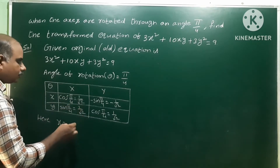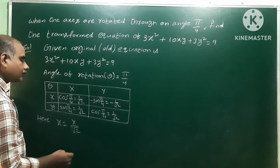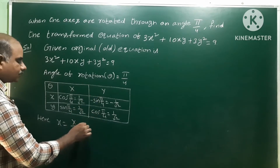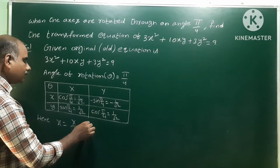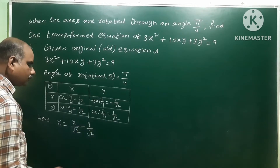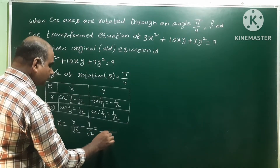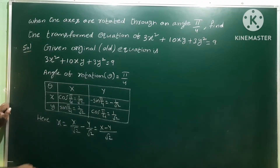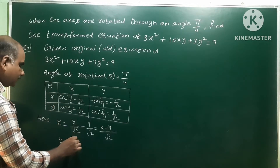Therefore small x = X·(1/√2) − Y·(1/√2). Taking the LCM, this gives small x = (X − Y)/√2. That is the expression for the old x-coordinate in terms of the new capital X and capital Y.